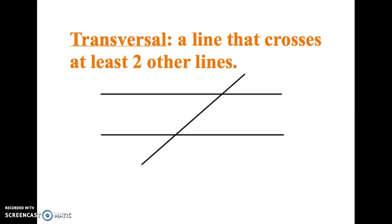A transversal, that's the line that crosses at least two other lines. So in this case, what I'm highlighting in green is the transversal. You might want to color that in your notes.